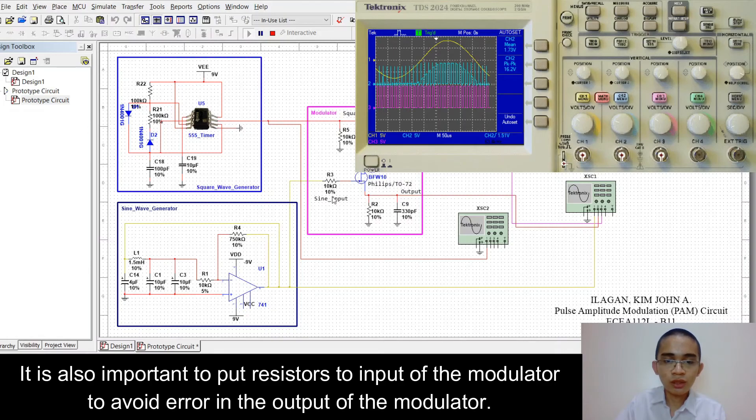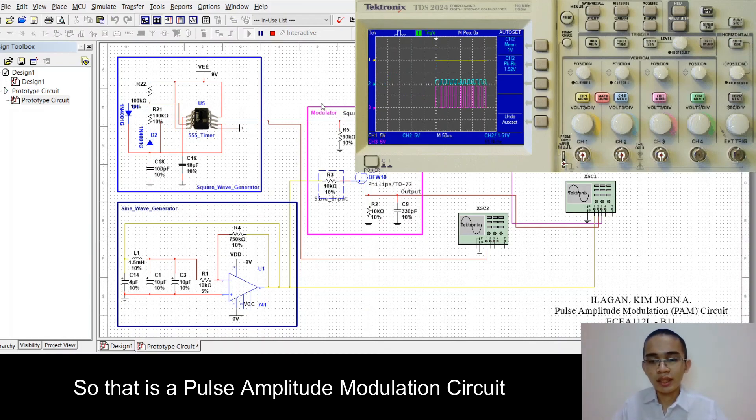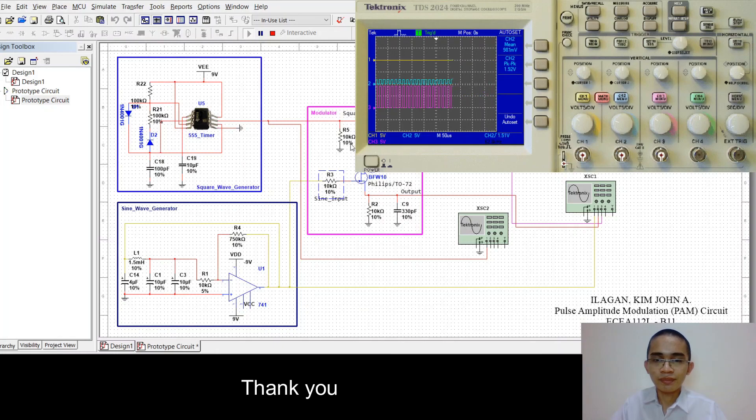It is also important to put resistors to the input of the modulator to avoid error in the output of the modulator. So, that is a pulse amplitude modulation circuit. Thank you.